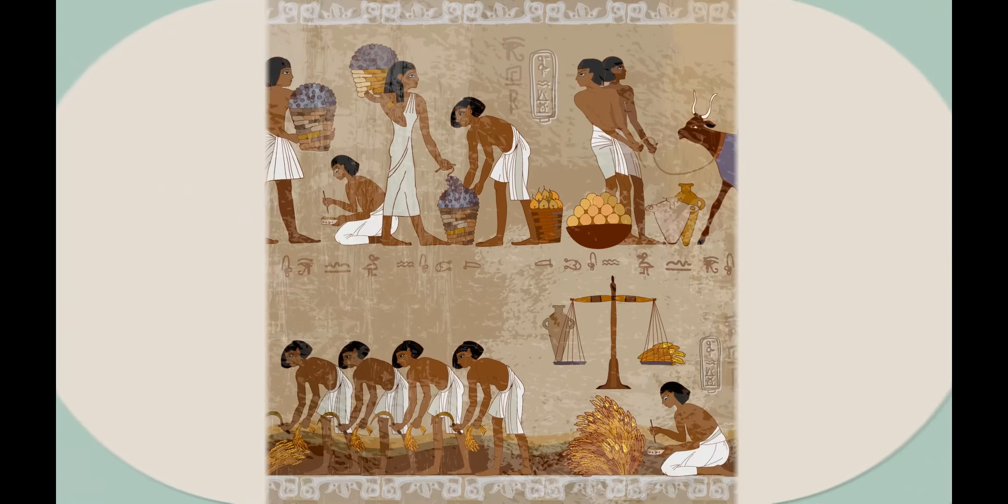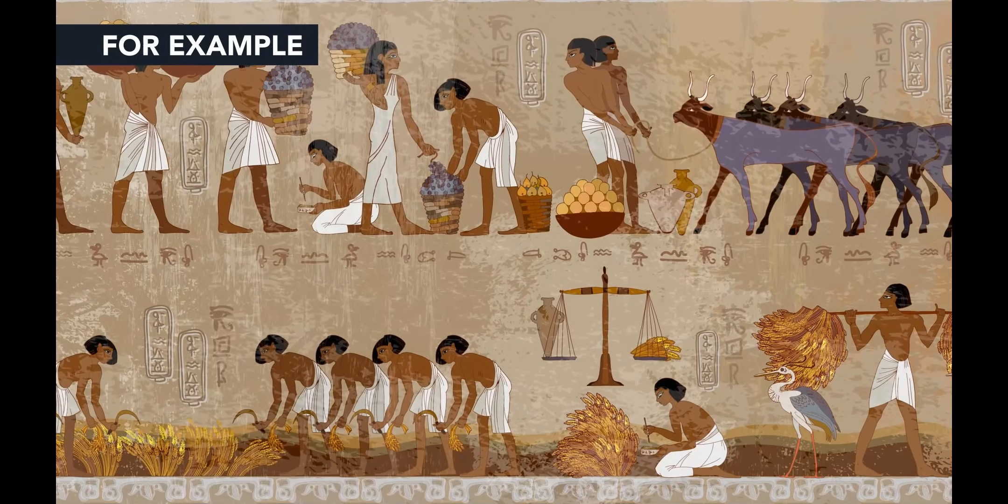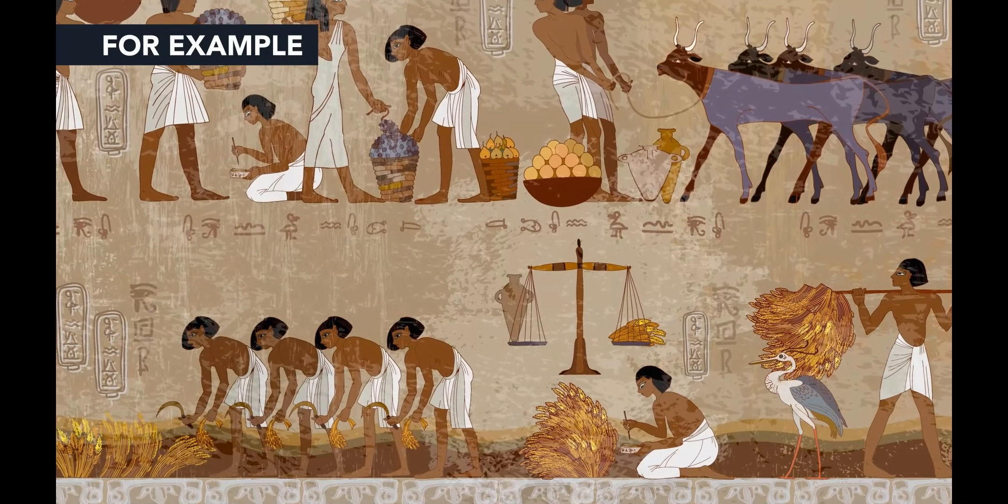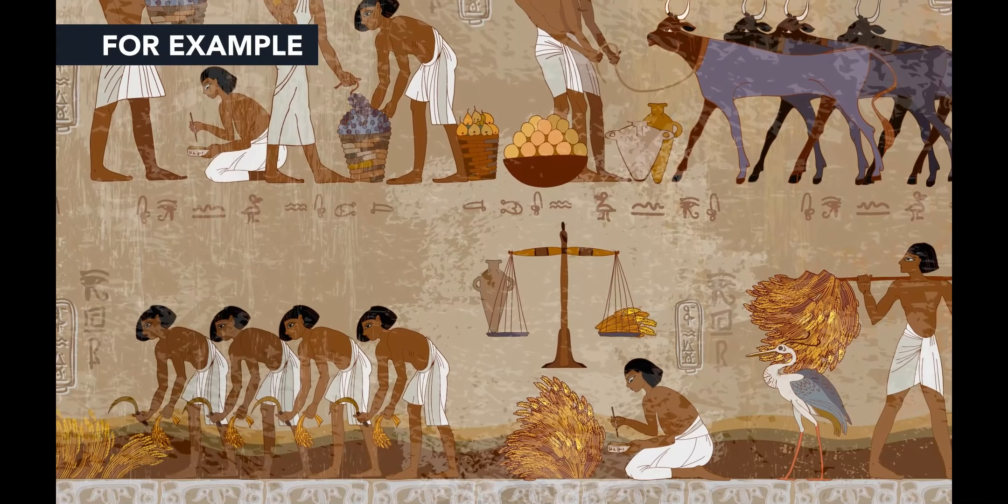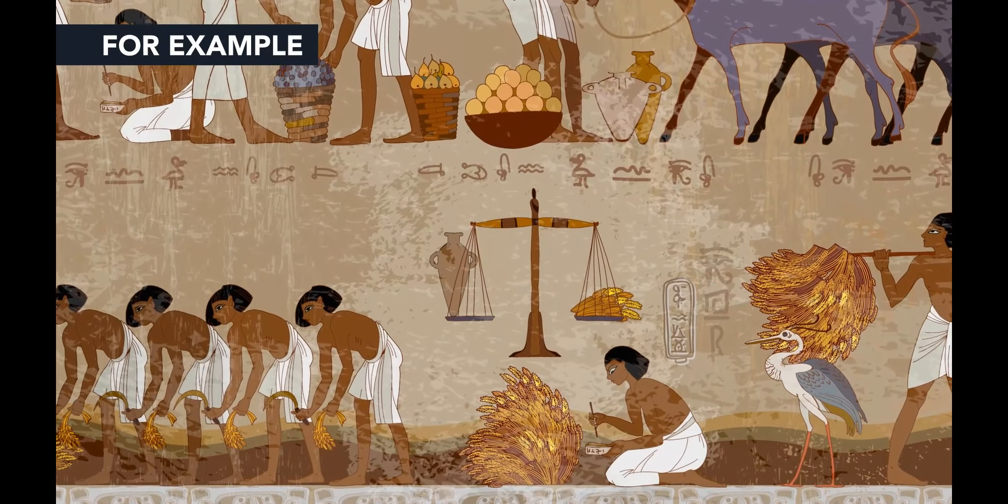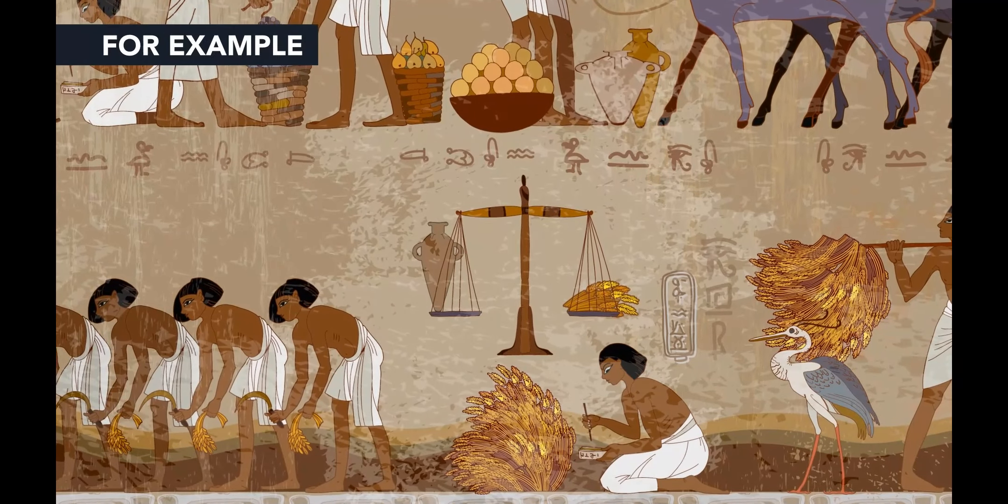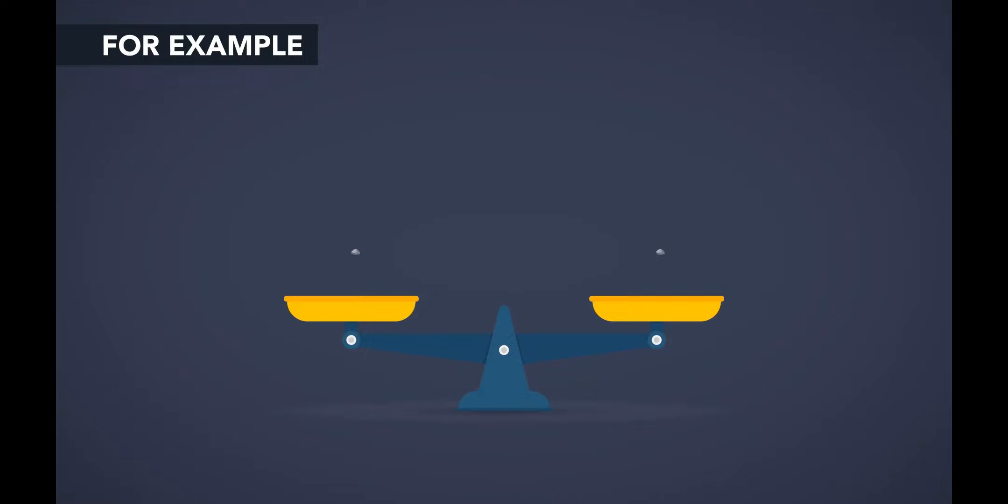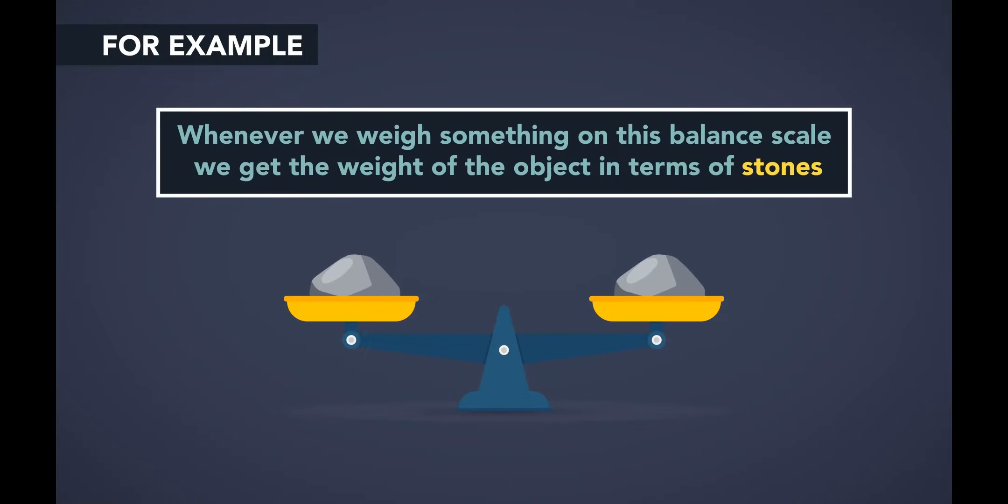Here's an example of an algebra problem. In the ancient world, weight was determined by a balance scale. On one side of the scale, say the left side, we place the object we want to weigh. And on the other side of the scale, we place equal weights so that the scale balances. For illustrative purposes, say that the weights were equal sized stones. Whenever we weigh something on this balance scale, we get the weight of the object in terms of stones.